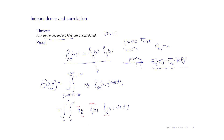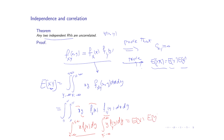This becomes the integral of x times f_x(x) dx, multiplied by the integral of y times f_y(y) dy. Because the region of integration is a rectangle — from minus infinity to plus infinity in both dimensions — I can decompose the double integral into the product of two separate integrals. The first is the definition of the expected value of x, and the second is the expected value of y. So the theorem is proven: if two random variables are independent, they must be uncorrelated.